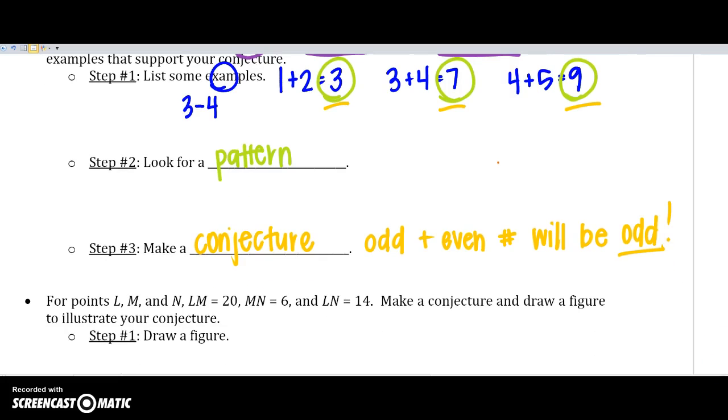All right, what about geometric? So, I have 4 points, or 3 points, L, M, and N, and I'm not really sure where they go. I'm also given the information LM is 20, MN is 6, and LN is 14. But I need to make a conjecture about just that information. We might want to draw a figure with some things we might think. So, some ways to go about it. I know that 14 and 6, if I added those together, I would equal 20.